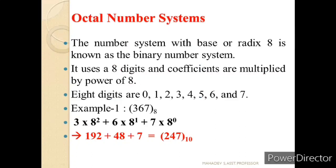Now let us see octal number systems. The word 'octal' stands for 8, so there are 8 different digits, and all numbers are represented as powers of 8. Let us understand a simple example: 367 base 8. It is represented as 7 × 8⁰, 6 × 8¹, and 3 × 8². Converting: 8² = 64, 64 × 3 = 192, 6 × 8 = 48, plus 7 = 247 in decimal (base 10). This is how octal number systems are represented.